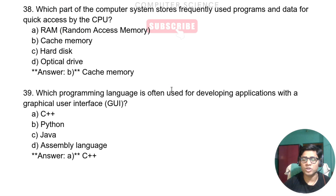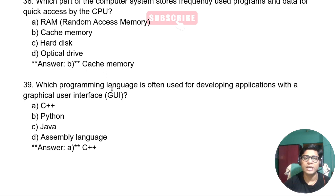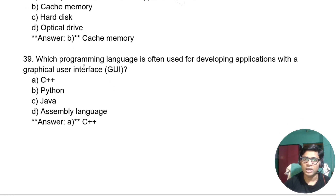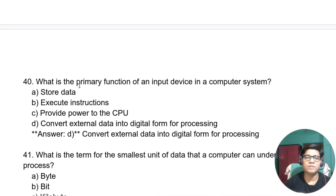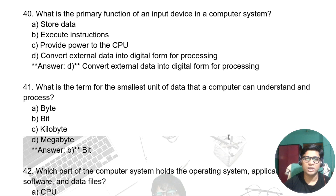Which part of the computer system stores frequently used programs and data for quick processing by the CPU? Which programming language is often used for developing applications with a graphical user interface? We use C++ and Python, but here the answer is C++. What is the primary function of an input device in the computer system? It converts external data into digital form for processing.